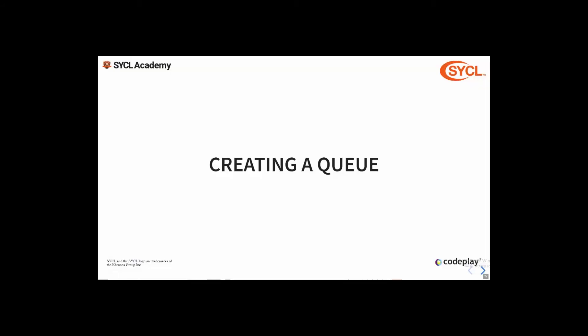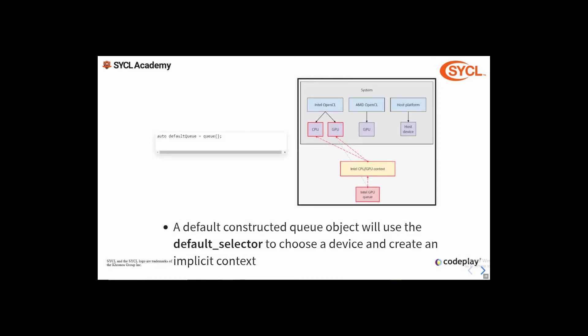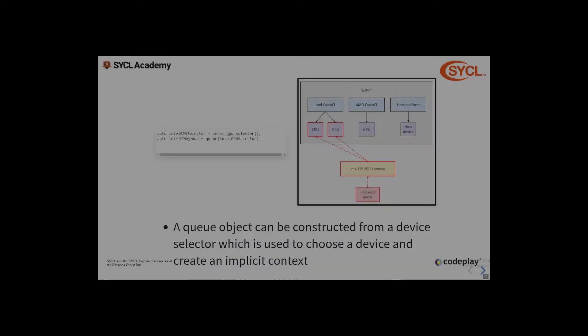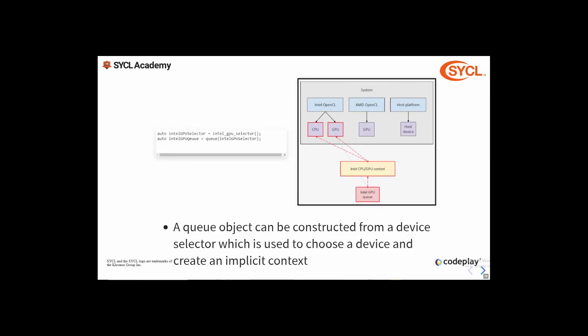So how do you create a queue? The simplest way is to default construct a queue, which will use the default selector. This creates a queue associated with the device selected by the default selector and implicitly creates a context for it and all other devices on the same platform. For example, if the default selector chooses the Intel GPU device, we create a queue for the Intel OpenCL GPU with an implicit context that also includes the Intel OpenCL CPU. Alternatively, you can construct a queue from a device selector, which gives the same result but lets you explicitly request a particular device.